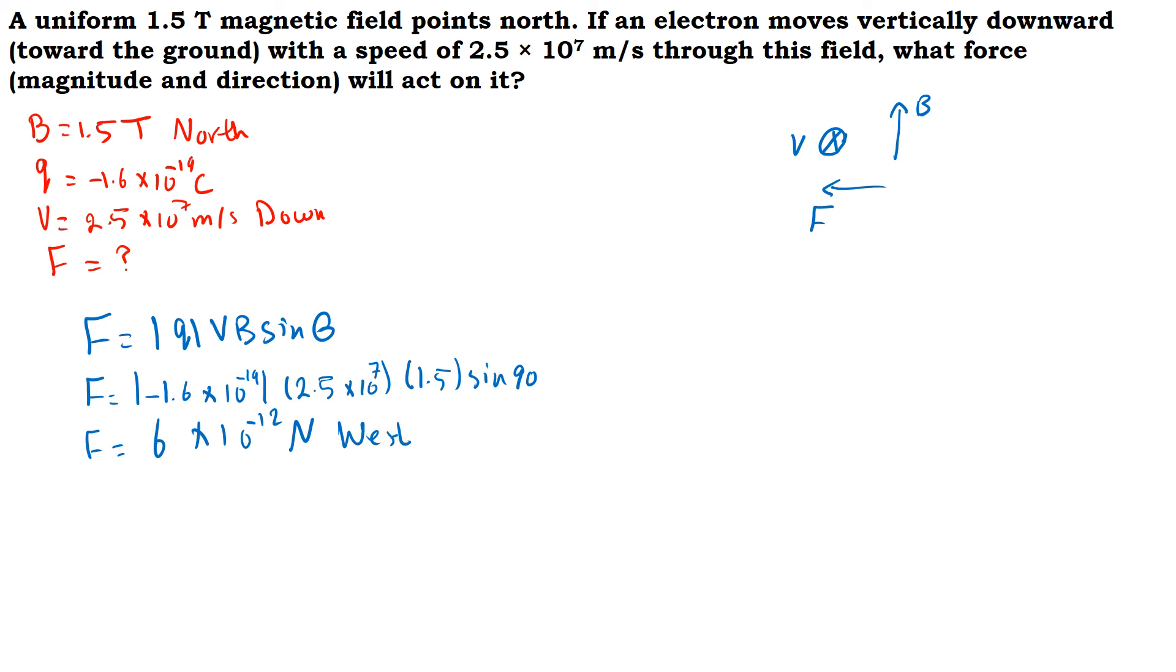For the electron, which is a negative charge, we will take the opposite. So we'll say that F is going west. Again, for the direction we use the right-hand rule where V is represented on the thumb.